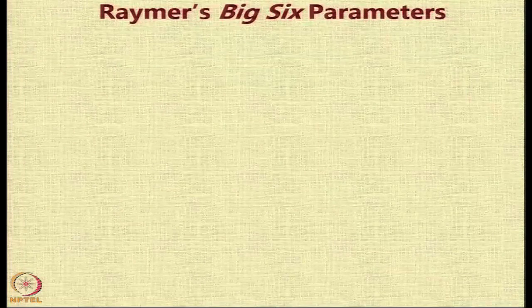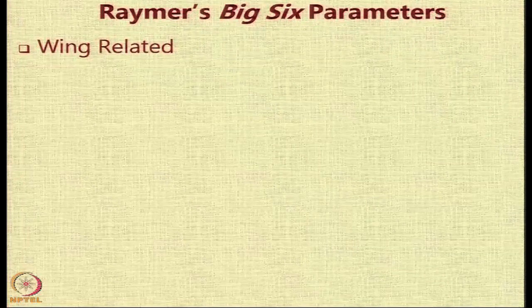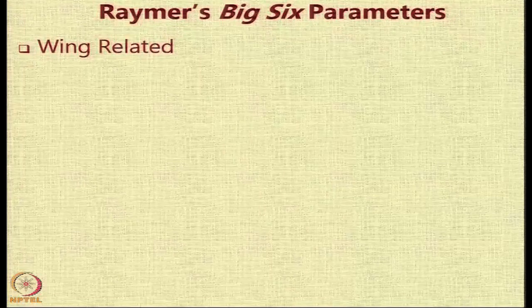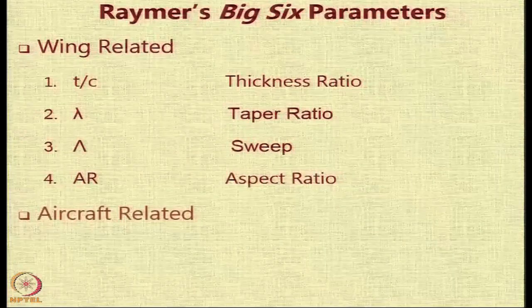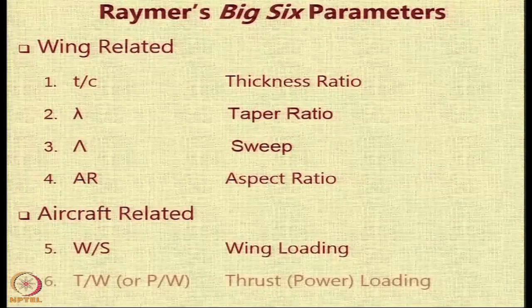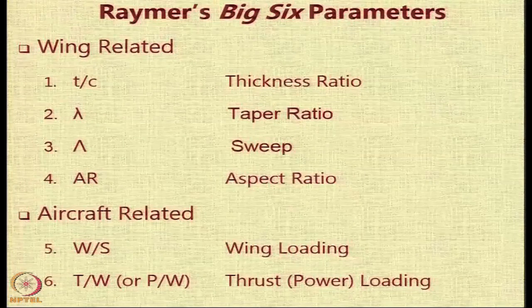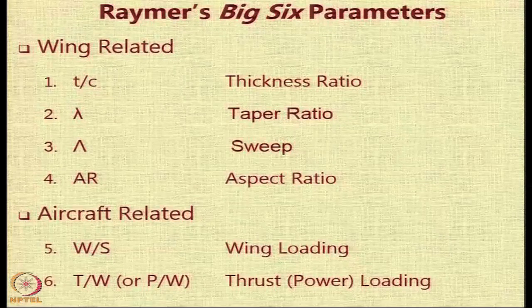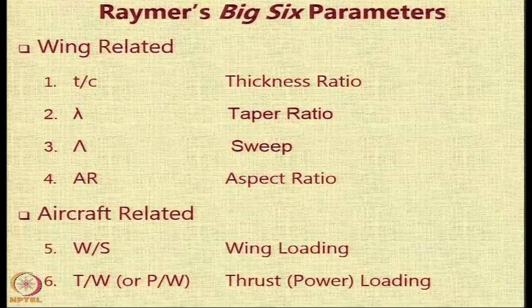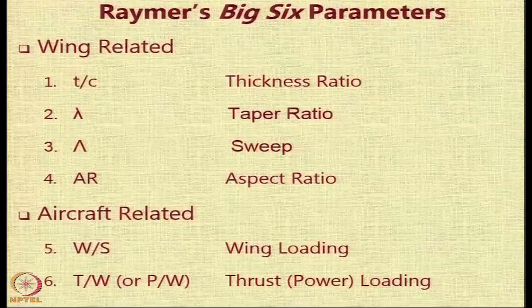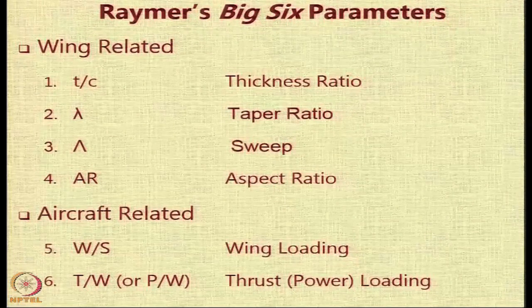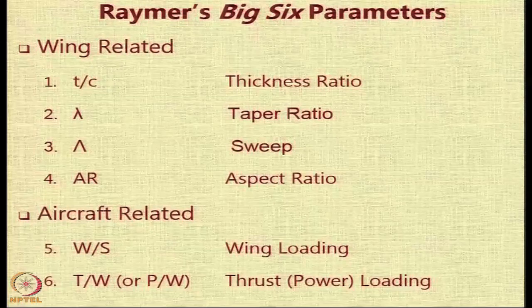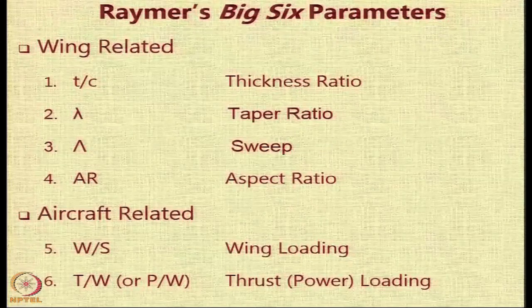Raymer has suggested that in aircraft design there are these 'big 6' parameters — if you can get the values of these parameters, you have a handle on the aircraft. Of these, a few are wing-related: the thickness-to-chord ratio, the taper ratio, the sweep, and the aspect ratio. Two are aircraft-level parameters: the wing loading and the thrust loading or power loading, depending on whether you are using a turbojet/turbofan engine or a piston/turboprop engine. The constraint analysis tries to arrive at the right values of these two aircraft-level parameters.